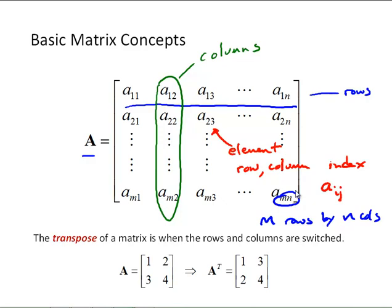Once we have a matrix, one basic concept we can introduce is the transpose of a matrix. The transpose of a matrix is when the rows and columns are switched. So, here's a simple example with a 2x2 matrix. We see the diagonal elements stay the same. And we've just basically switched the 3 and the 2 in the transpose. The transpose operator in MATLAB is an apostrophe.